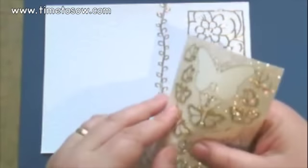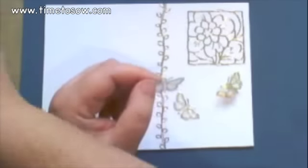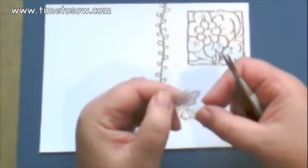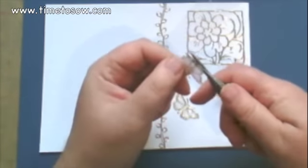Peel the second one. Sticky side up. A little bit of acetate behind the wing. Trim around.